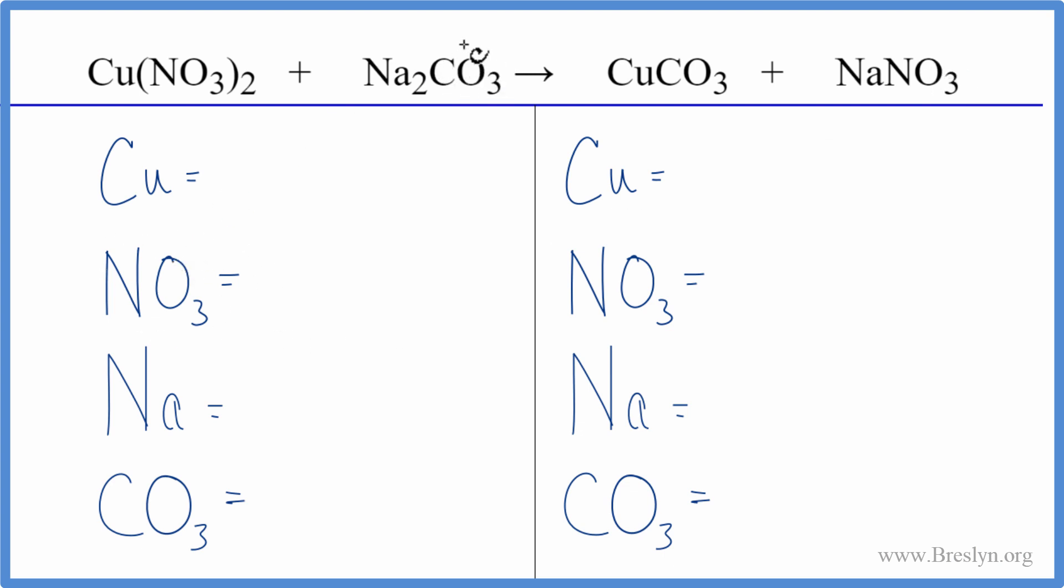Same for the carbonate. We have a carbonate ion here and here. We're just going to call CO₃ one thing. That will make the balancing a whole lot easier for double displacement reactions like this. Let's try it. We have one copper,